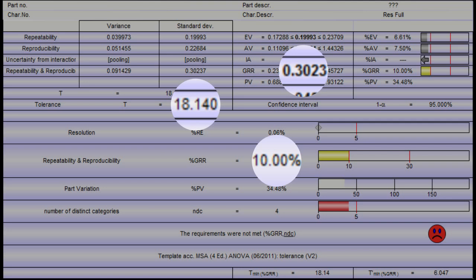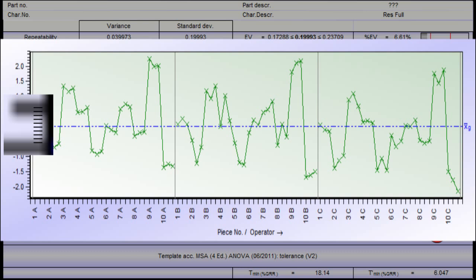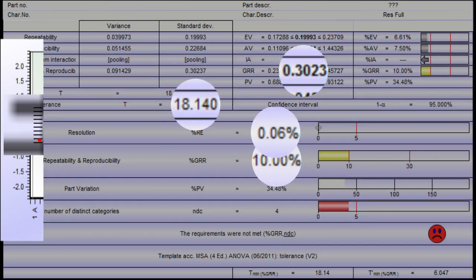In other words, if the tolerance is 18.14 or more, the gauge R&R is ok. The resolution was 0.01 which is 0.06% of the tolerance way below the criteria of 10% but the NDC is only 4. Is it a problem? Do we need to change something about the measuring devices?